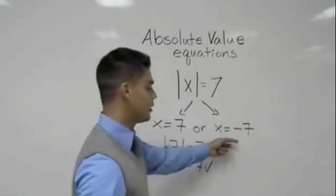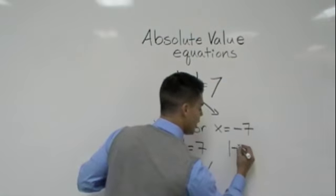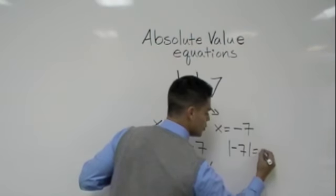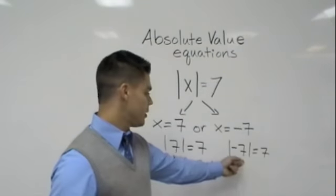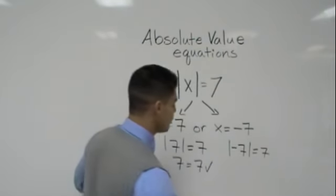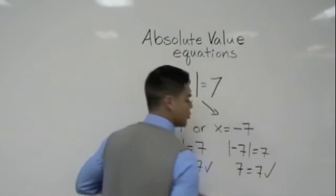Let's try the other one. Now we plug in a negative 7 in for x. So we take the absolute value of negative 7 is equal to 7. And again, absolute value is always positive. Therefore, the absolute value of negative 7 should be 7 is equal to 7. And that also checks out.